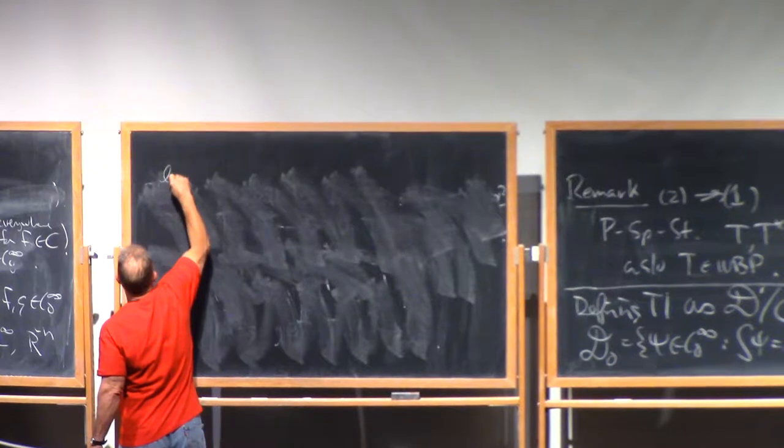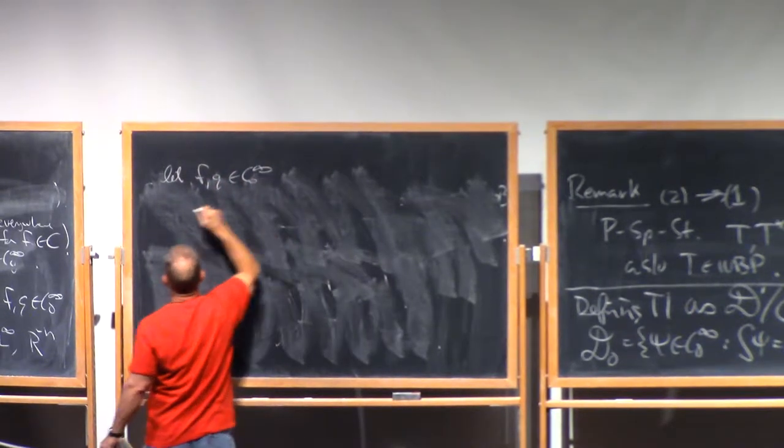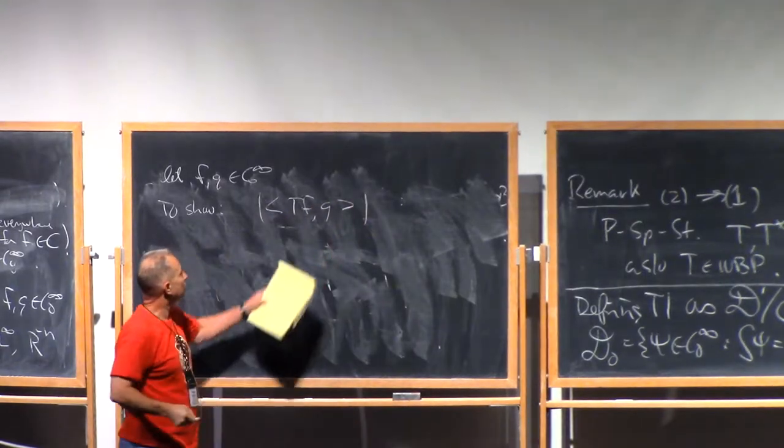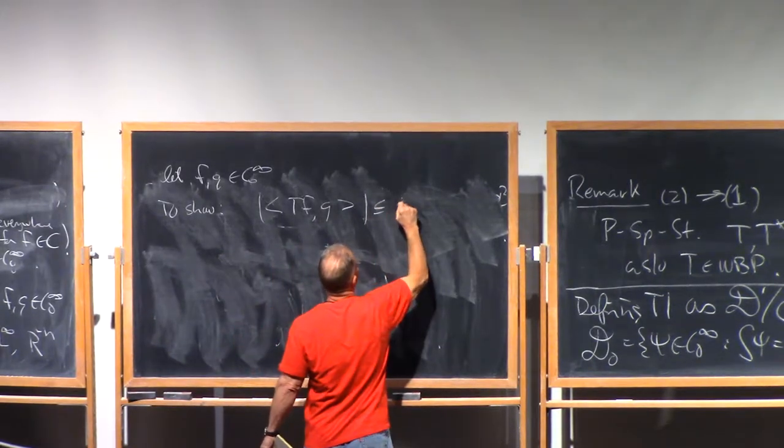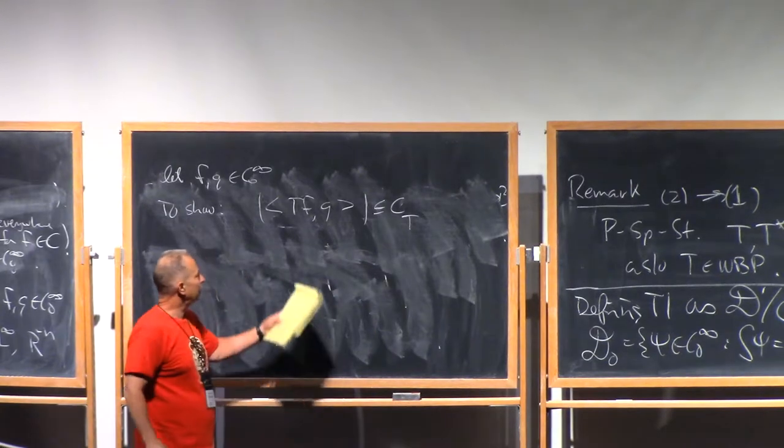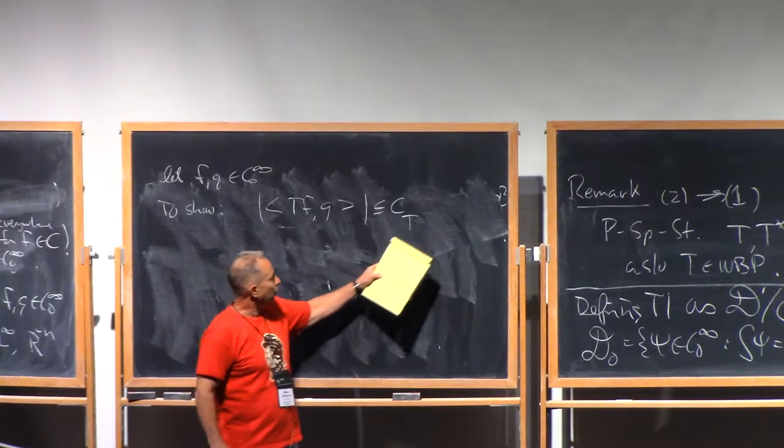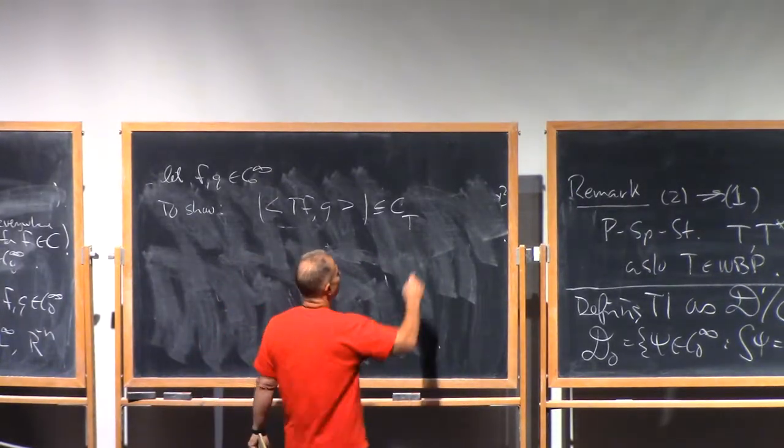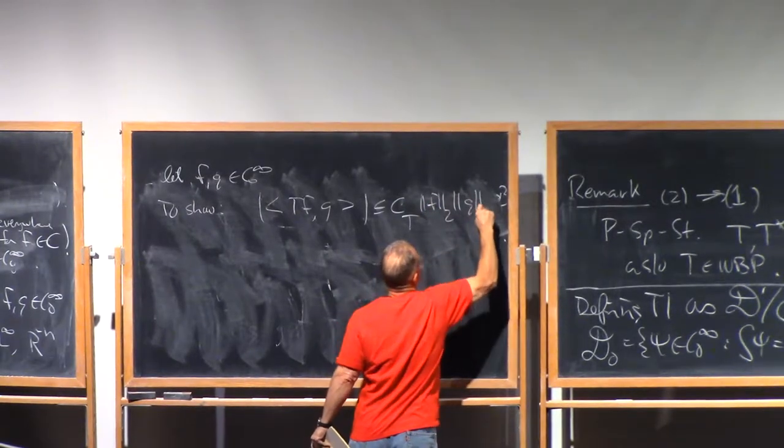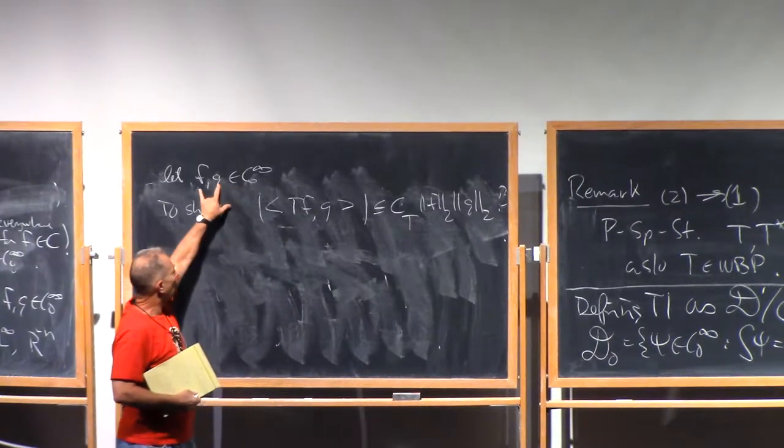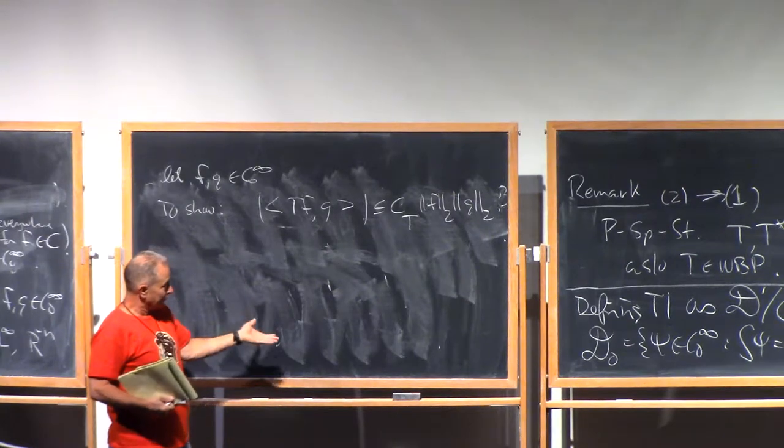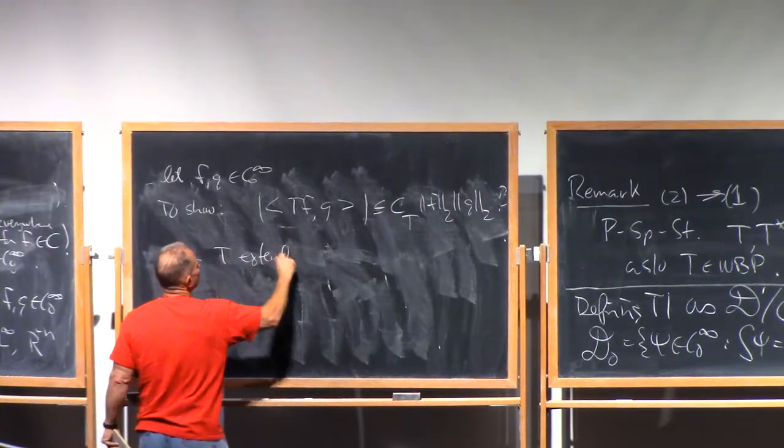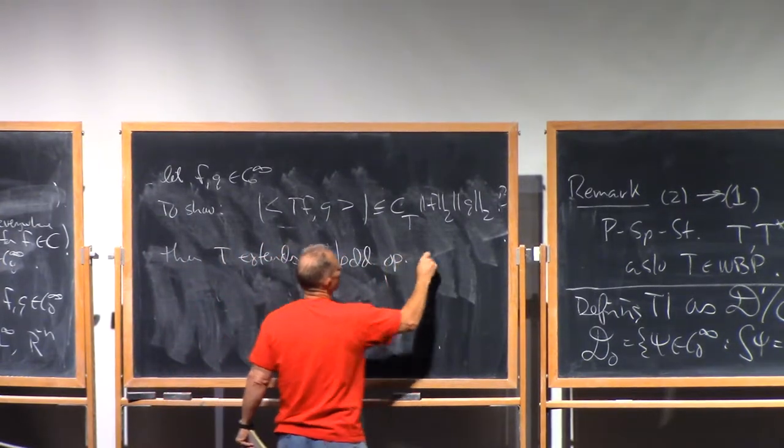So, if we combine these facts together, what does that say? Let F and G be in C zero infinity. And our goal is to show that if we make this pairing initially defined in the sense of distributions, that there's some uniform constant, depending on dimension and Calderón-Zygmund estimates for the kernel and BMO norm of T of 1 and T star of 1, and the constants of the weak-bounded property, all that usual stuff, then this should be bounded by the L2 norm of F times the L2 norm of G. Because if you can do that for all F and G in this dense subspace of L2, then you would just make an extension by continuity and T extends to a bounded operator on L2.